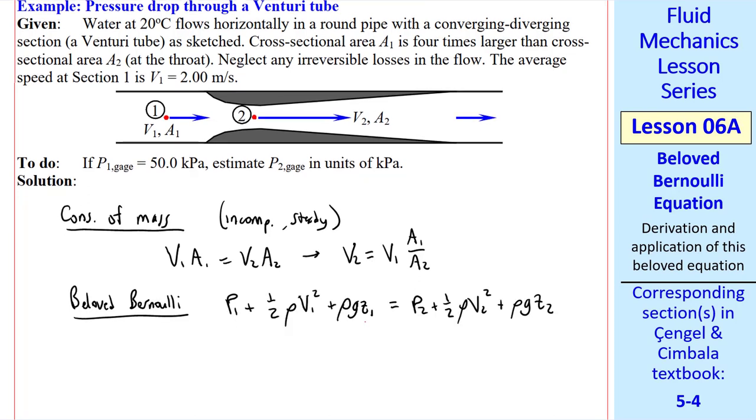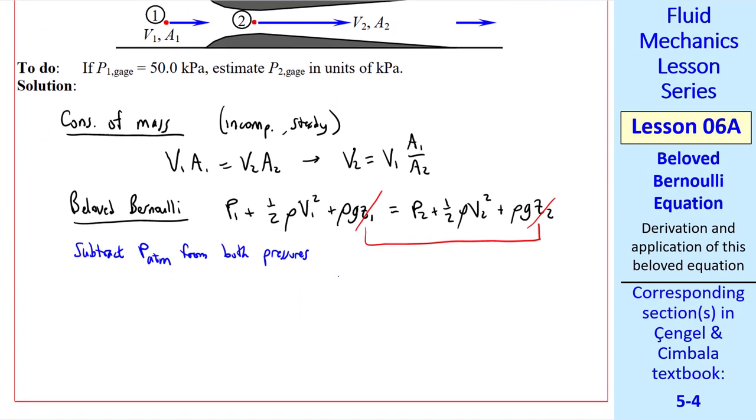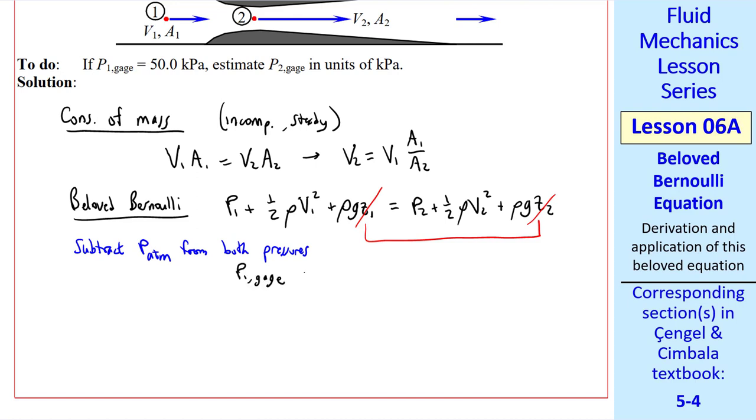Since this Venturi meter is horizontal, the z's cancel. We subtract P atmosphere from both pressures. We can do that since we're just subtracting P atmosphere from both sides of the equation. So now we have P1 gauge and P2 gauge.